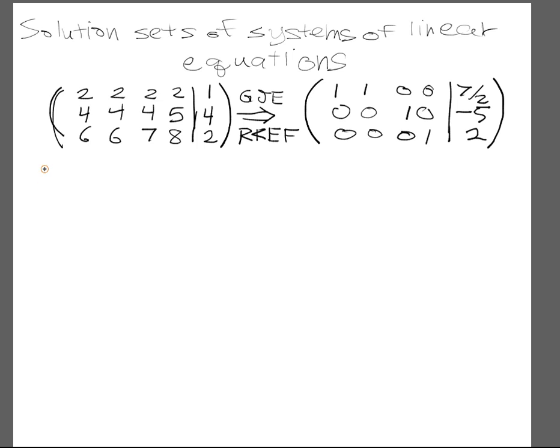And so when we look at the solution set to this thing, we would have that x1 is equal to 7 halves minus x2, x3 is equal to negative 5, and x4 is equal to 2. And that's the solution set.